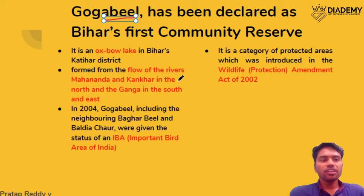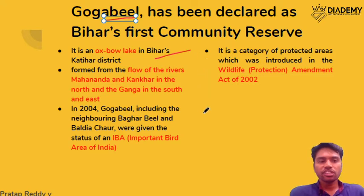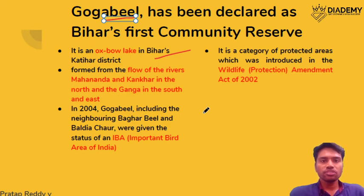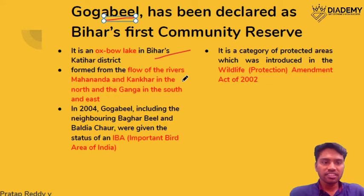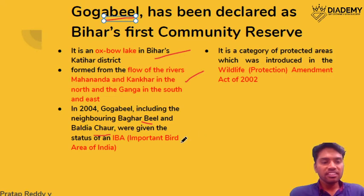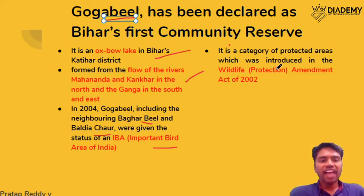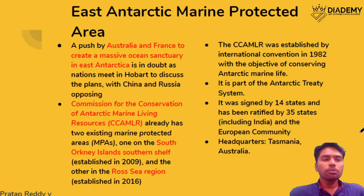Bihar gets its first community reserve called the Goa Bheel. Goa Bheel is an oxbow lake — from geography we know an oxbow lake is formed when the course of a river changes, and a portion of its past course becomes a lake. It is formed within the rivers of Mahananda and Kankar on the north side and Ganga in the south and east. In 2004, Goa Bheel included Bhabar Bheel and Baldiya Chaur, and has been declared an important bird area in India. Community reserves have their backing in the Wildlife Amendment Act of 2002.